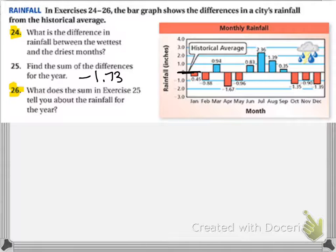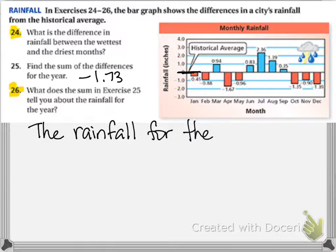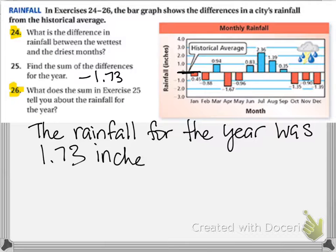Well, we know that zero is the historical average, so that tells us that the rainfall for the year was 1.73 inches below the historical average.